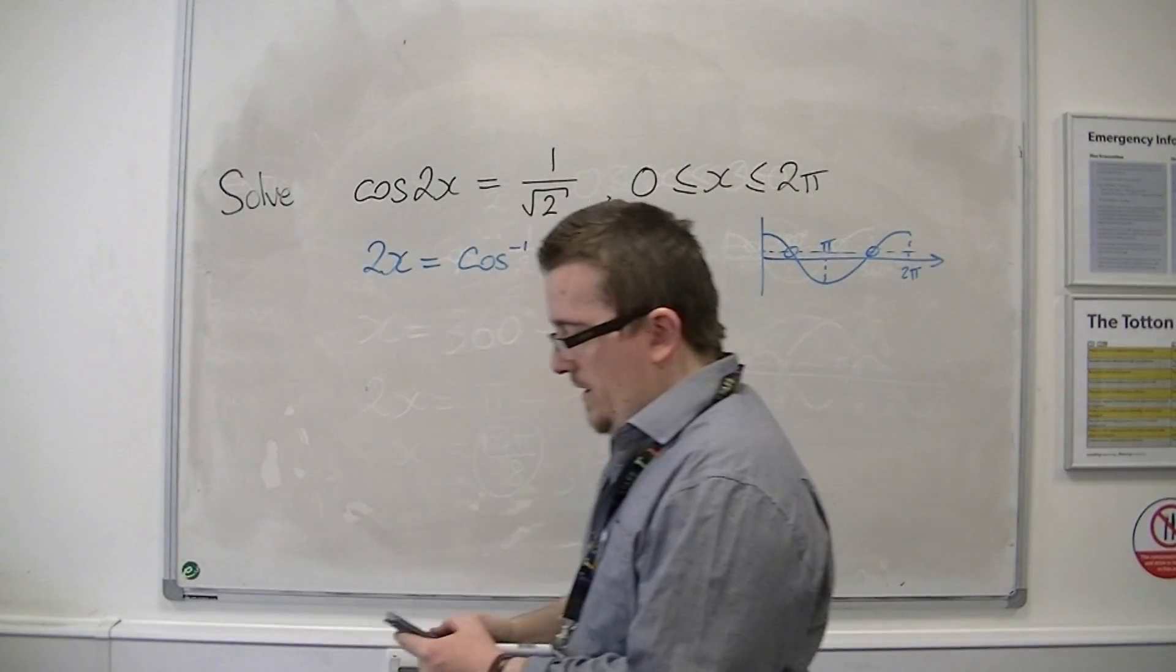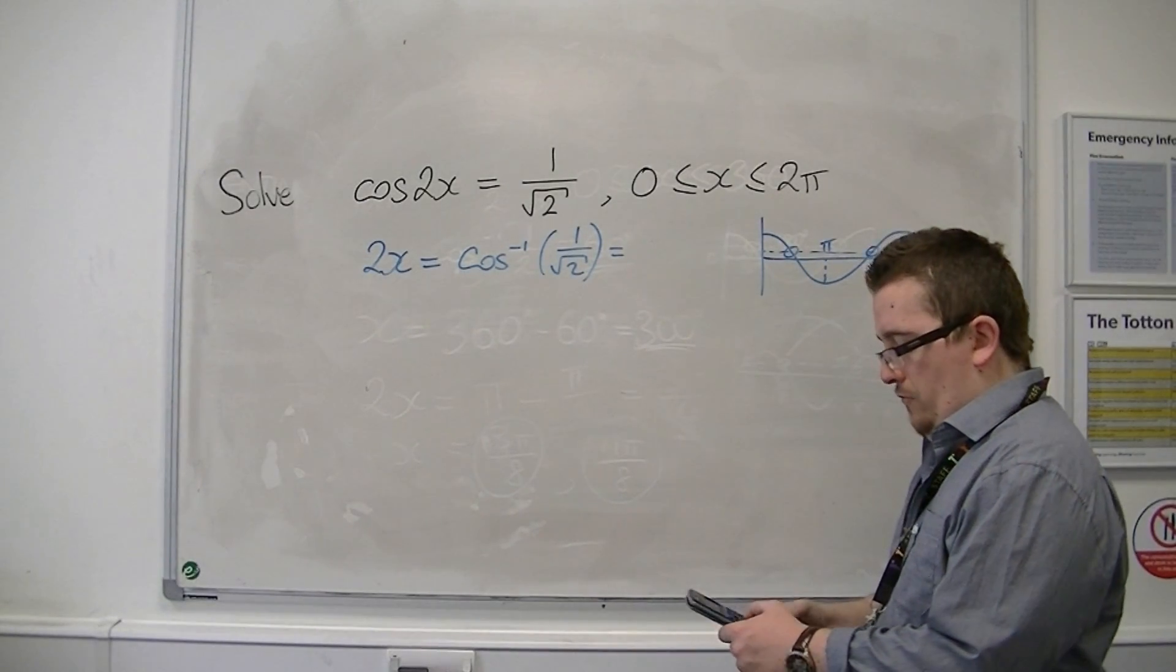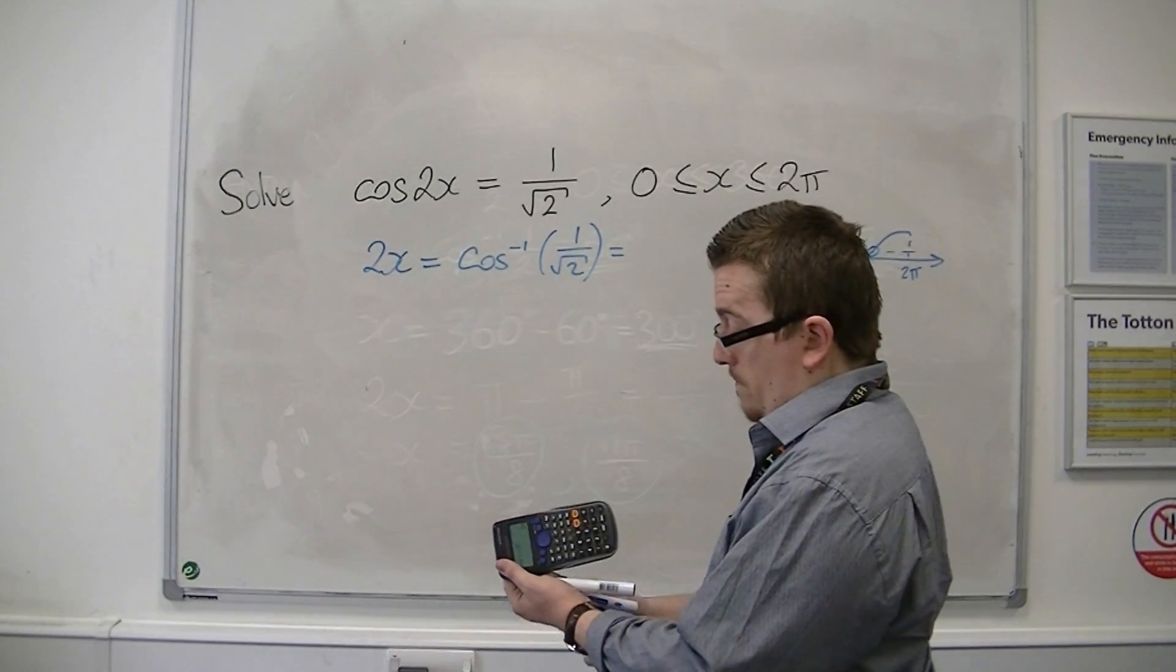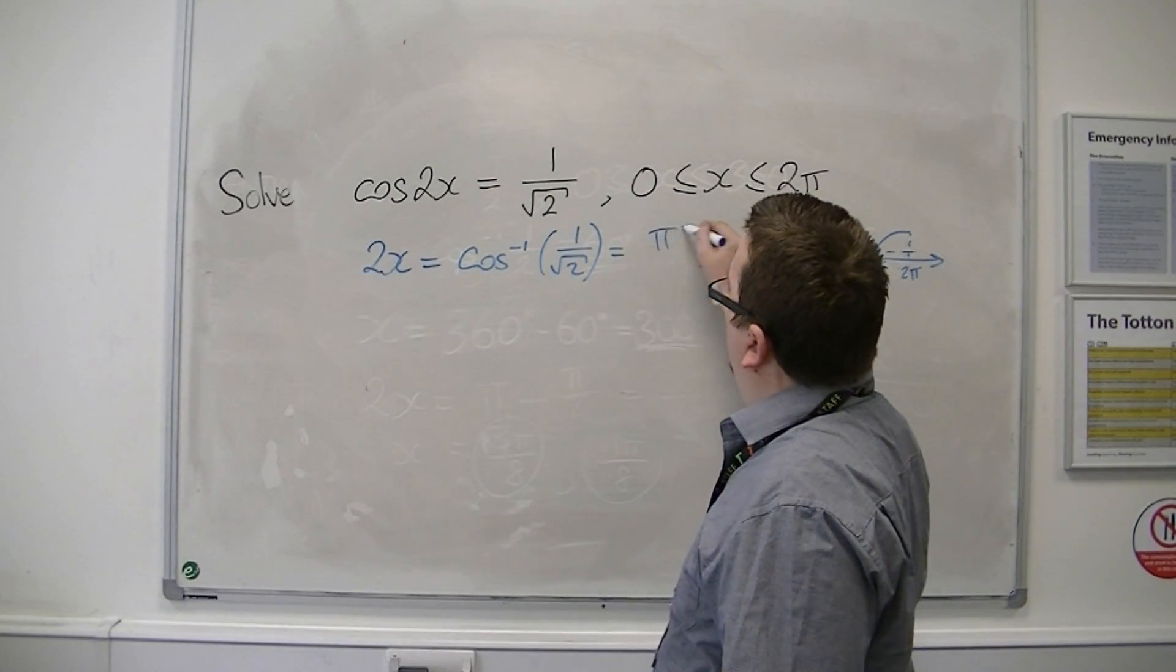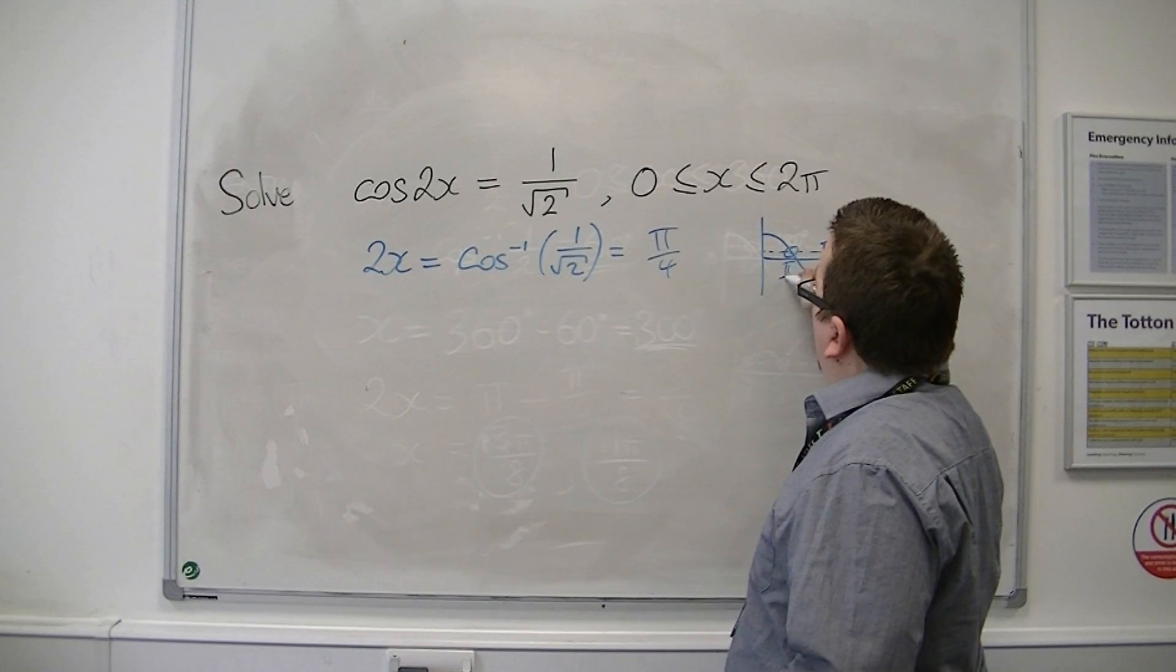So inverse cosine of 1 over root 2 is 1 quarter pi, or pi over 4. So that's my first solution.